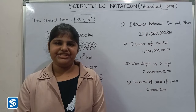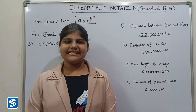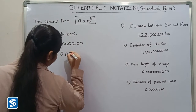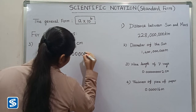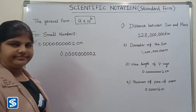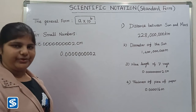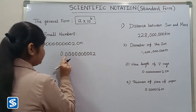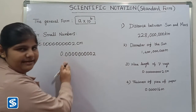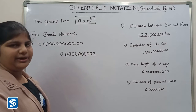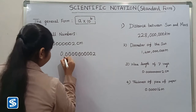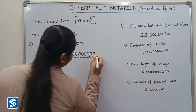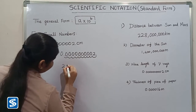Next we will look at scientific notation for small numbers. We take the wavelength of gamma rays. To find the a value, we locate the decimal point — this is a decimal number, so the decimal point is already shown. We move the decimal point until the coefficient is greater than or equal to 1 and less than 10. The a value is 2, so we write 2 multiplied by 10.